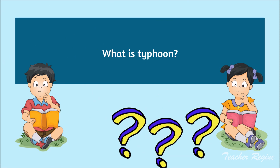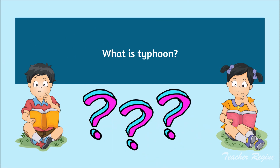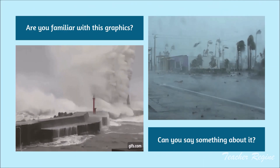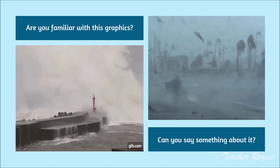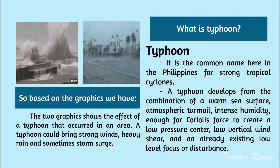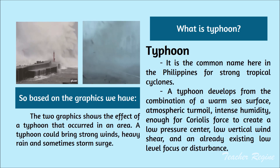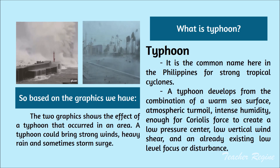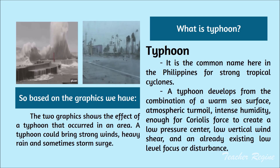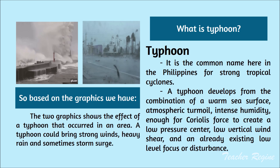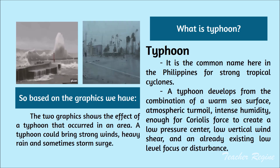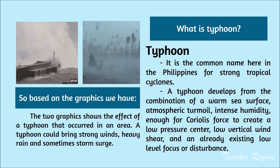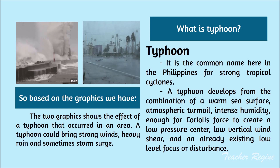What is typhoon? Are you familiar with this graphics? Can you say something about it? Based on the graphics that we have, the two graphics show the effect of a typhoon that occurred in an area. A typhoon could bring strong winds, heavy rain, and sometimes storm surge. Weather conditions affect family and community activities, transportation services, and the environment.